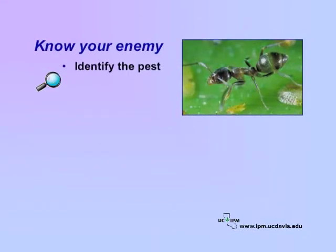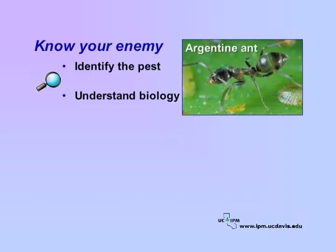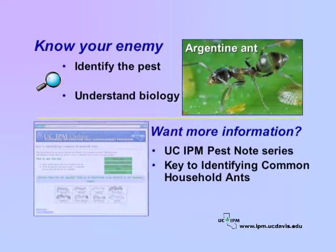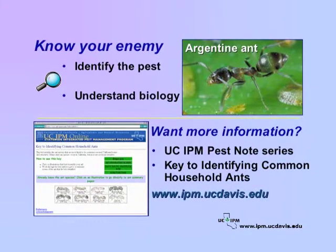Successful IPM begins with correct identification of the pest. In addition, you can't manage a pest without understanding its biology. The Argentine ant is the most common ant problem in California and will be the focus of this presentation. Several other ant species occasionally occur and cause problems; however, they won't be covered in detail. See the UC IPM Pest Note series and the Key to Identifying Common Household Ants on the University of California IPM website for information on other types of ants.